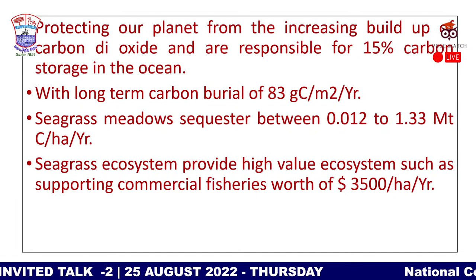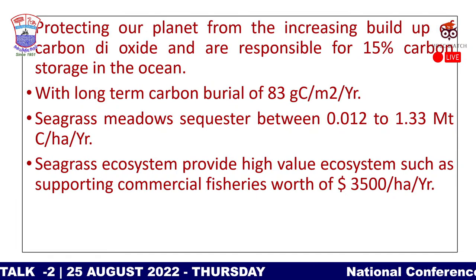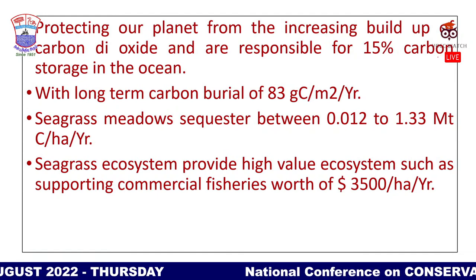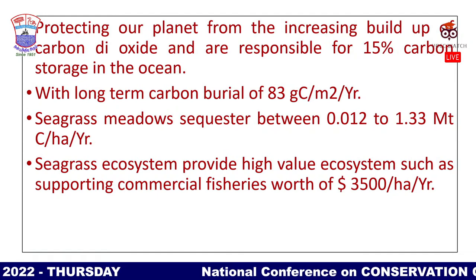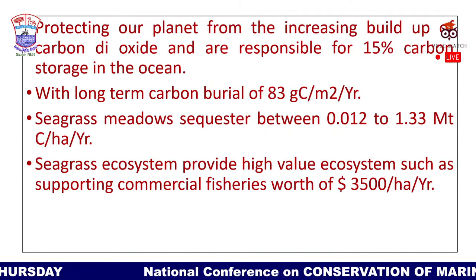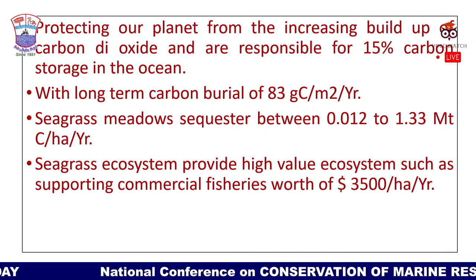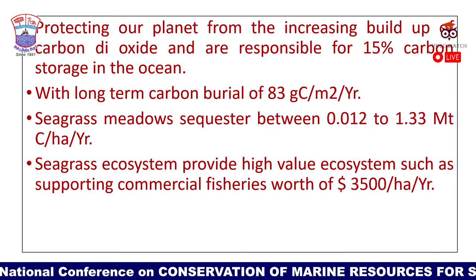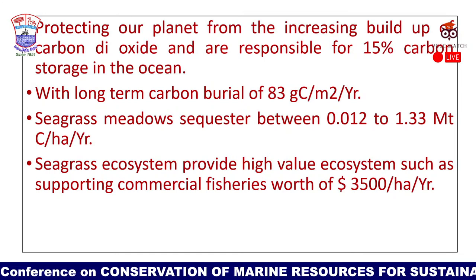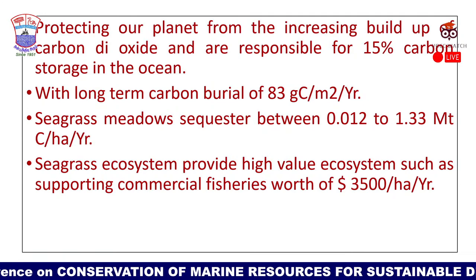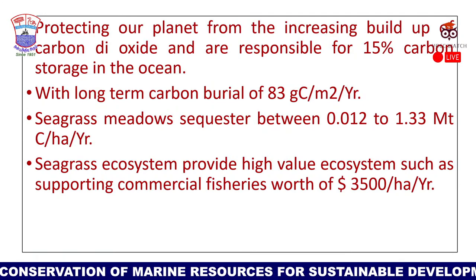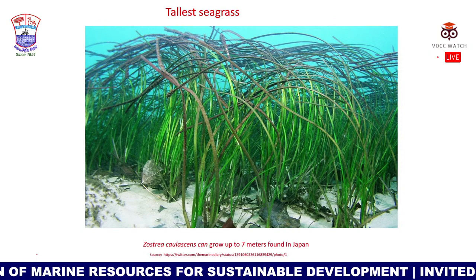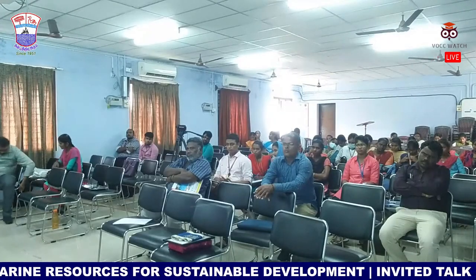Seagrasses protect our planet from the increasing buildup of carbon dioxide, responsible for 15 percent carbon storage with long-term carbon burial of 83 grams carbon per meter square per year. Seagrass meadows sequester between 0.012 to 1.33 metric tons of carbon per hectare per year — more than most terrestrial plants. The commercial fishery value of seagrass ecosystems is worth $3,500 per hectare per year. The tallest seagrass, Zostera caulescens, can grow up to seven meters and is found in Japan.